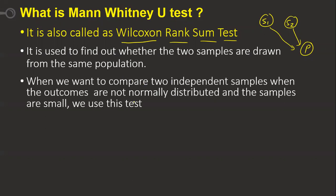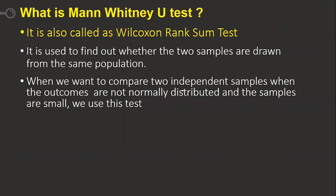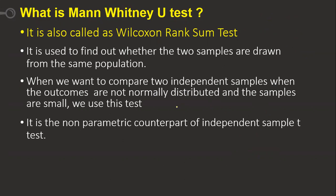We use the Mann-Whitney U test to compare two independent samples when the outcomes are not normally distributed. For example, if two samples have different distribution shapes and are not normally distributed, we use this test. It is the non-parametric counterpart of the independent two-sample t-test.